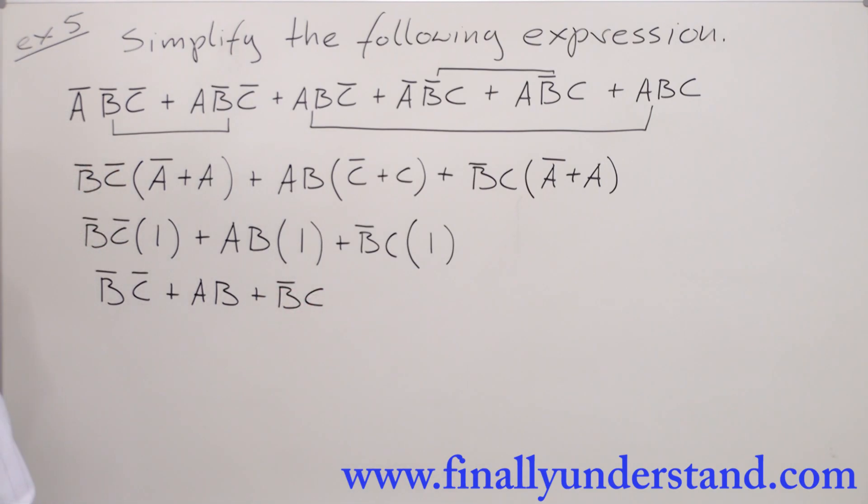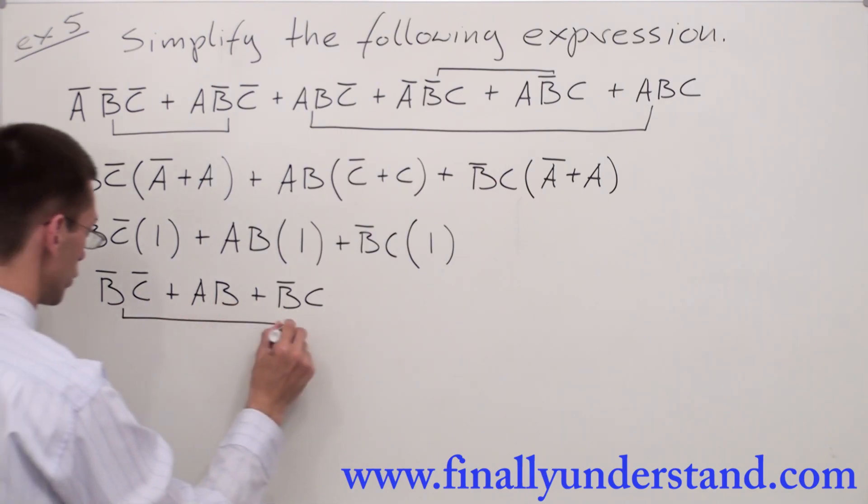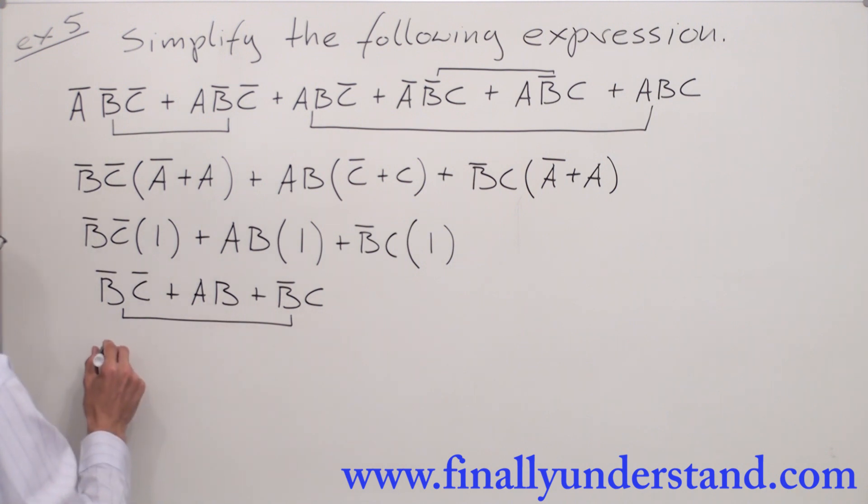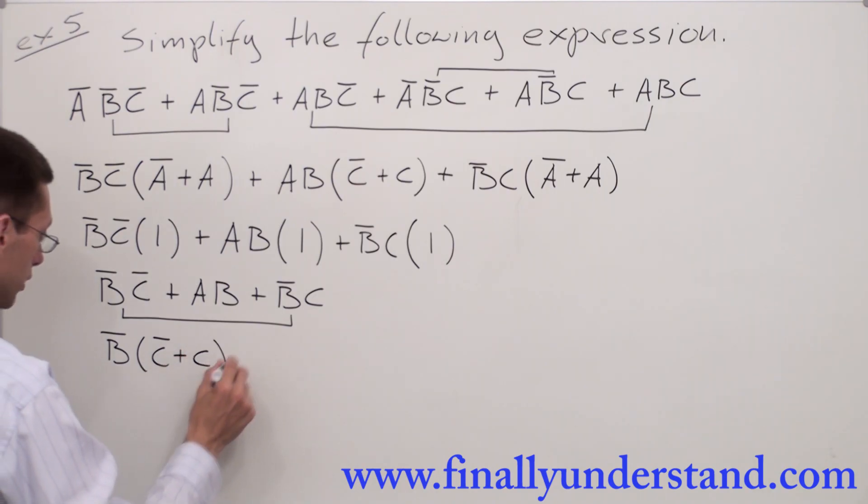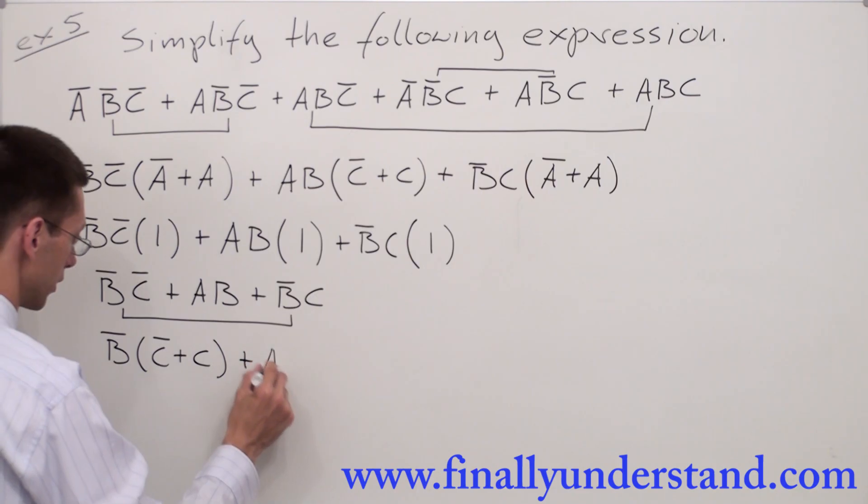Now, let's take a look at what we can factorize from these terms. We have B bar and B bar. I'm going to factorize B bar from these two terms, and I'm going to end up with B bar, C bar or C, plus AB.